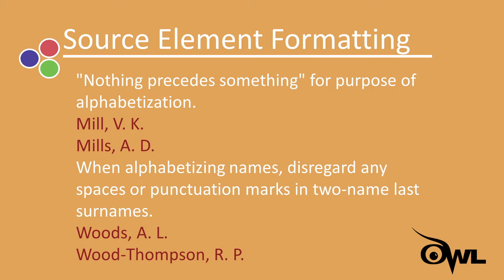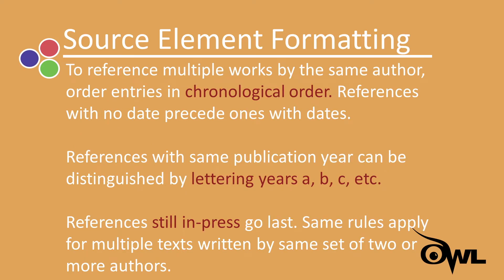When organizing reference lists, remember that nothing precedes something for the purpose of alphabetization. For instance, 'MIL-VK' would precede 'MILs-AD', even though S comes before V. Also, when alphabetizing names, disregard any spaces or punctuation marks in hyphenated or two-part last surnames. For example, author Woods precedes author Wood-Thompson because S precedes T in the alphabet. To reference multiple works by the same author, order entries in chronological order beginning with the first published. References with no date precede references with dates. References with the same publication year can be distinguished by lettering the years A, B, C, and so on. References still in press are listed last. These same rules apply when referencing multiple texts written by the same set of two or more authors.